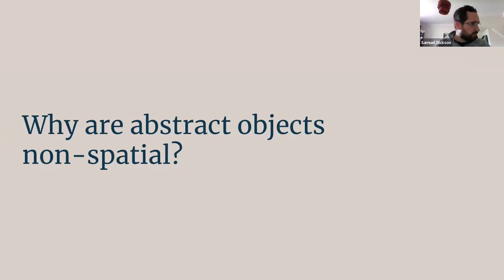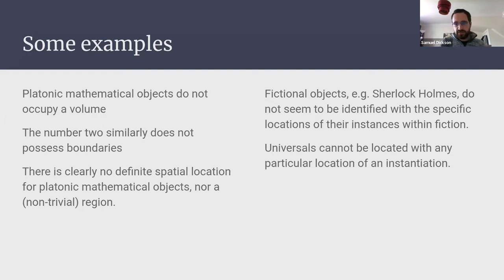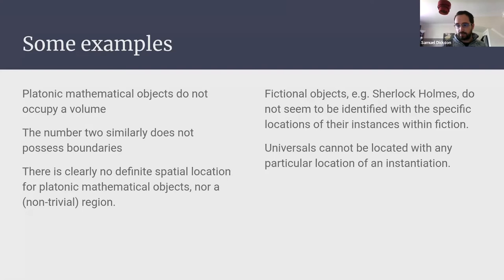Why do we take abstract objects to be non-spatial? Ultimately because they fail to do those three things. Talking in terms of platonic mathematical objects, it doesn't make sense to say they occupy a volume, have boundaries, or have a definite spatial location. For similar reasons, fictional objects and universals also aren't spatial, and so aren't concrete. Because we take the distinction to be exhaustive, we say these things must be abstract.